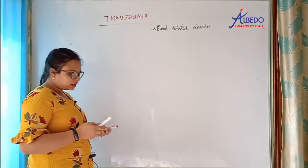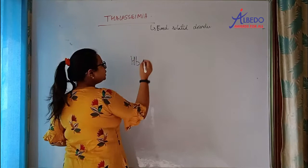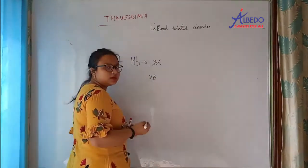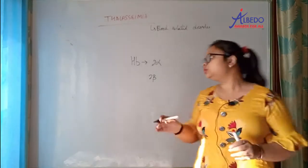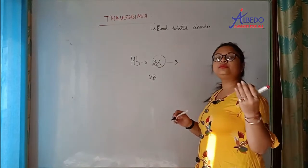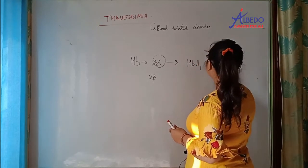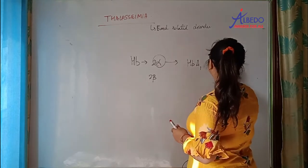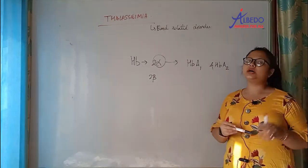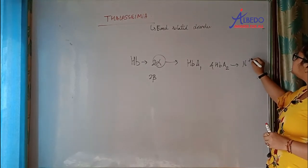The hemoglobin molecule is made up of two alpha chains and two beta chains. This is the normal adult hemoglobin. These two alpha chains are coded by two genes: HbA1 and HbA2. These two genes are located on the 16th chromosome.